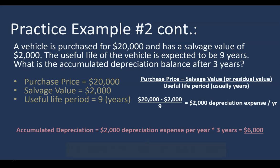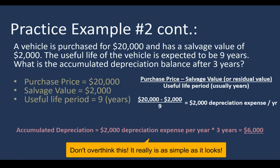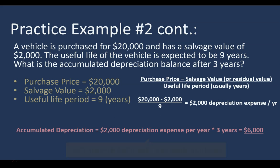It really is as simple as that — don't make it more complicated than it needs to be. Accumulated depreciation is nothing more than the total of the depreciation expense taken from the start of the asset's life to the point in time you want to measure it at. Could be one year, two years, three years, and so on. In the second example we took three years; in the previous example, two years. That's all there is to it — don't overthink it.